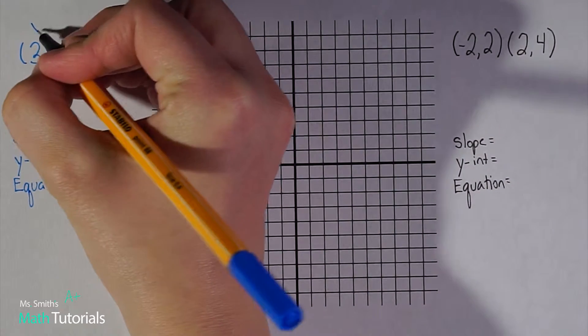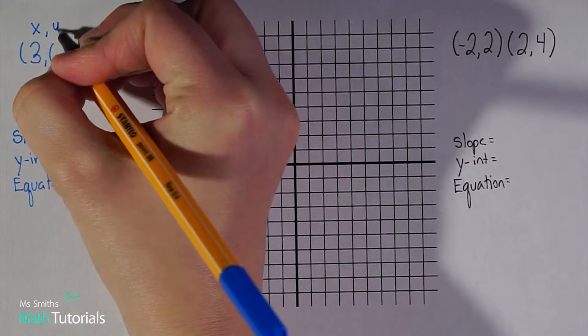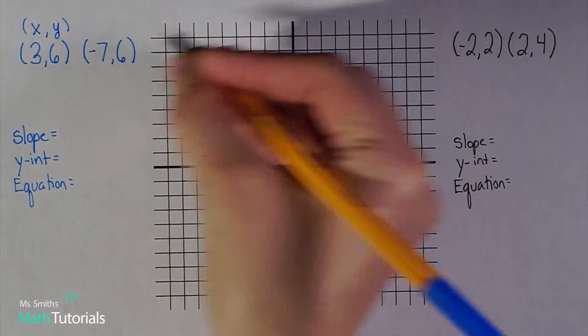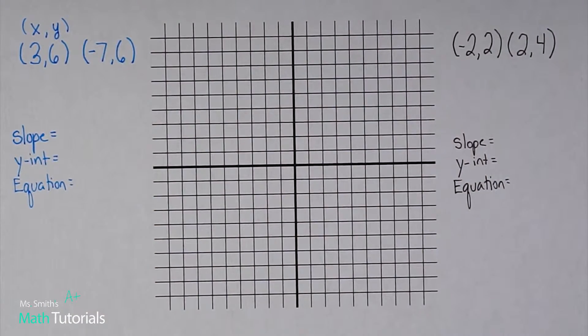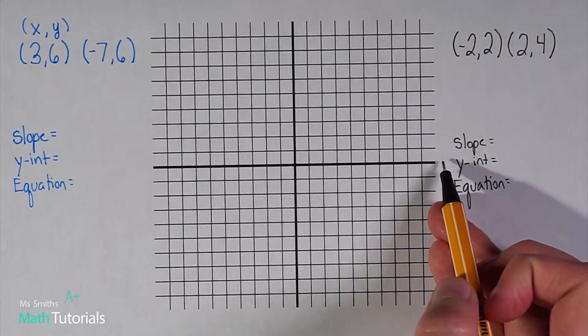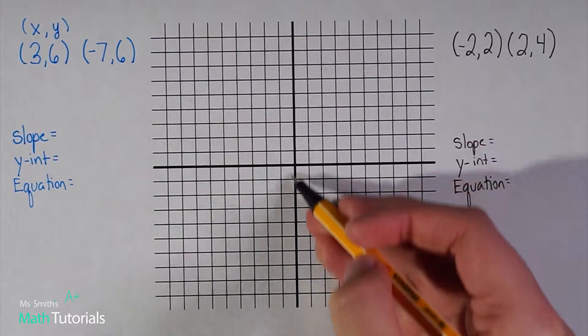This is an x, y point. All of these points will be an x, y point. This is my x-axis, and this is my y-axis.